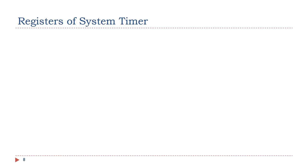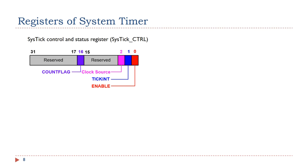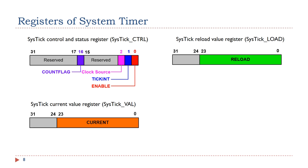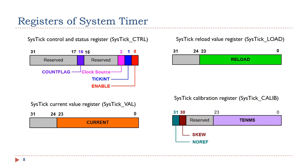The system timer is controlled by 4 registers, including the control and status register we just described, the reload value register SysTick LOAD, the current value register SysTick VAL, and the calibration register SysTick CALIB. Next, we will take a close look at these registers.